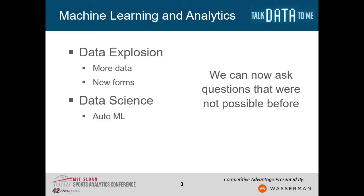We have new forms of data and we need to be able to use it. The way we're going to use it is because machine learning is maturing and we're beginning to be able to automate that process of learning from data. That's what we're looking at today — it's going to allow us to ask questions that were not possible before, and to dig into sports and business data in ways we've never been able to.